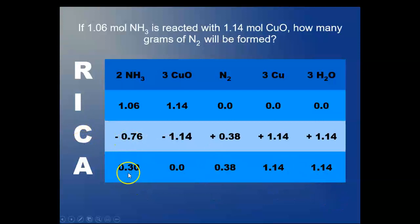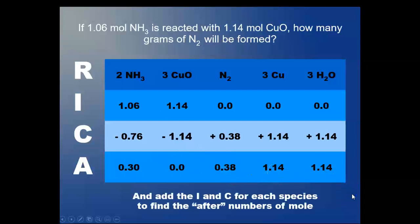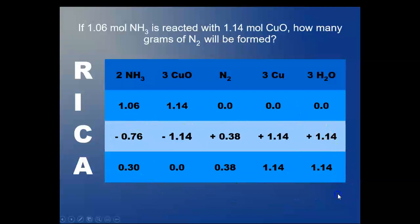The change here, you're going to be left over with 0.30 moles. There's no copper oxide left over. You've got your 0.38 moles of nitrogen, your copper, and your water. Now you add these species to find the after number of moles. I always add R to C for each one of these species to get the after numbers.